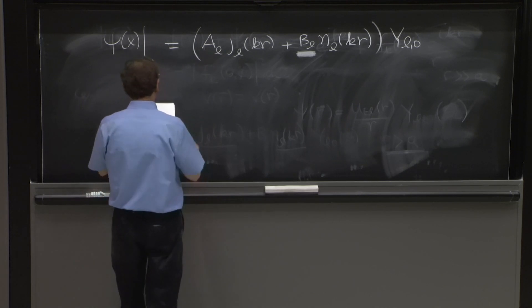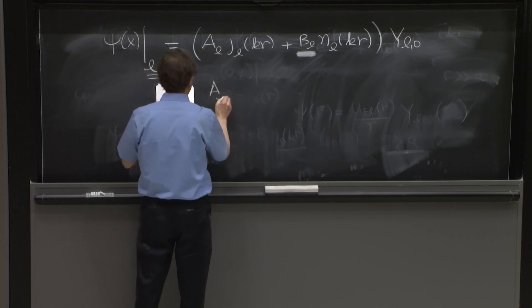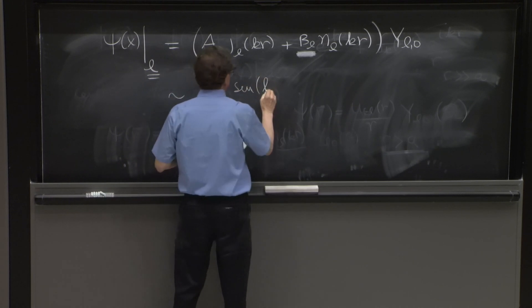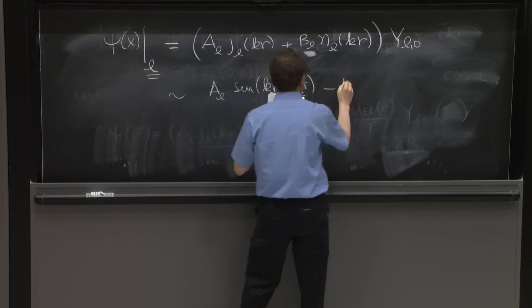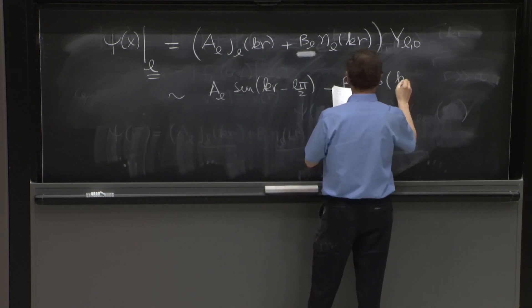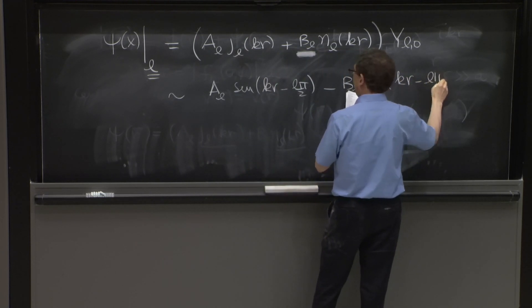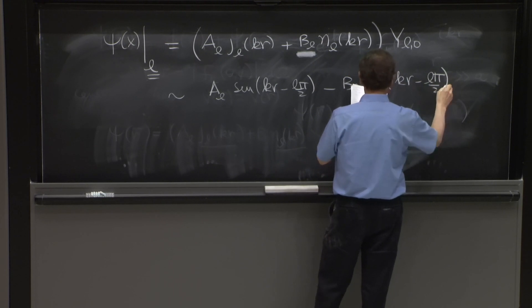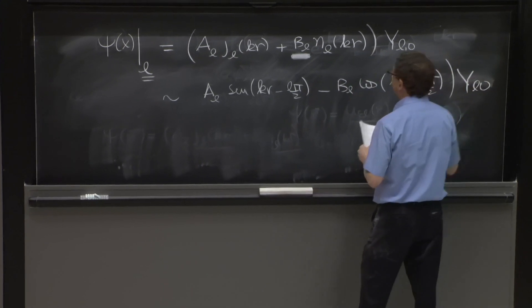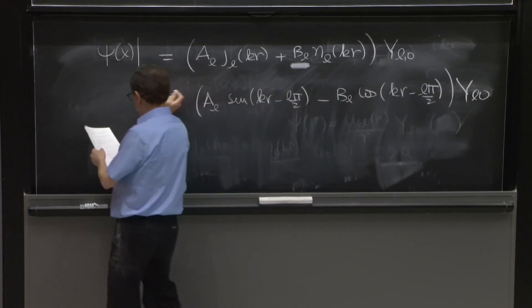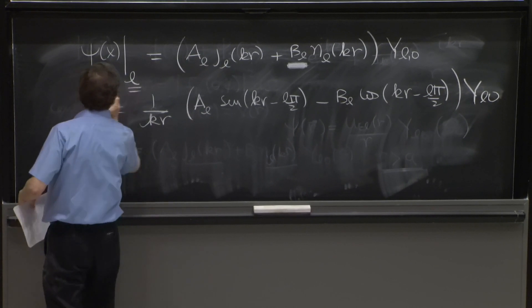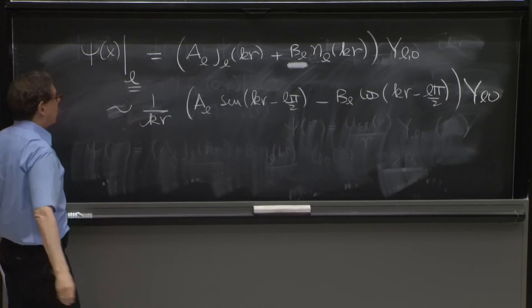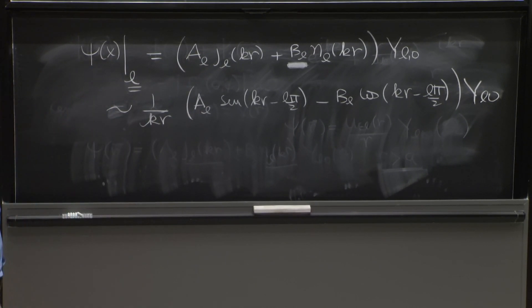Now expand for large r. So this is proportional to AL sine kr minus L pi over 2 minus BL cosine kr minus L pi over 2 YL0 1 over kr. I'm going to drop all constants very fast. Now, here is my claim.